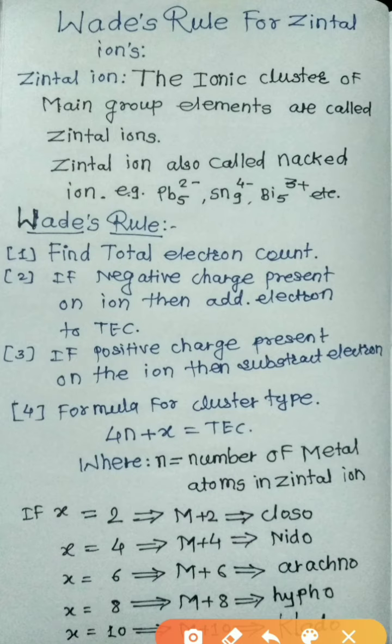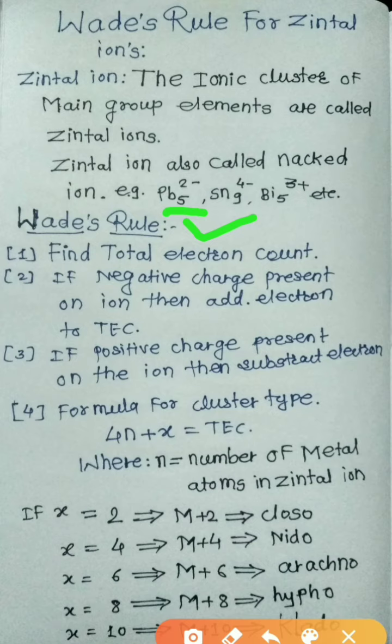Wade's Rule for the Zintl ion: the first rule is to find the total electron count. Total electron count means the number of metal atoms present in the Zintl ion multiplied by the total valence electrons, or valence electrons of each metal. For example, in Pb₅²⁻, the number of metal atoms is 5 and each lead has 4 valence electrons.